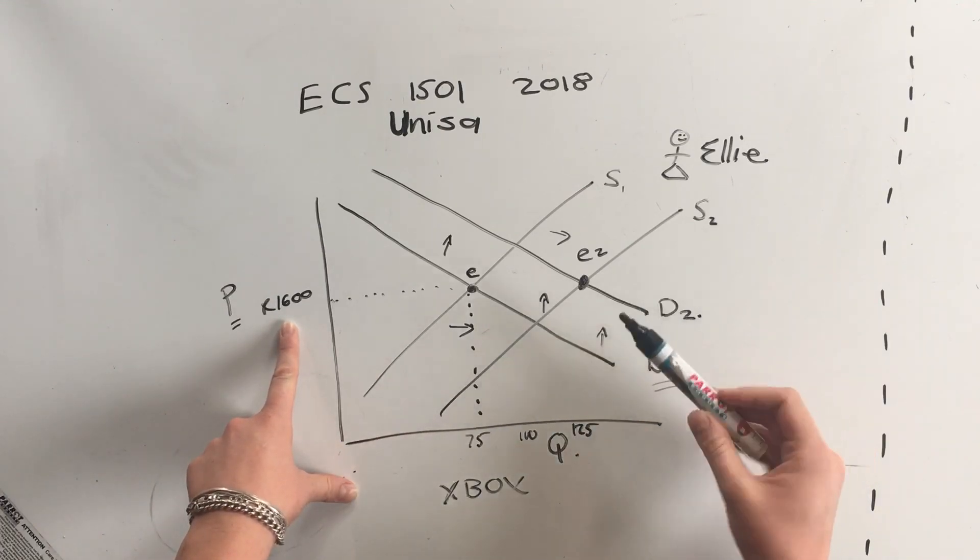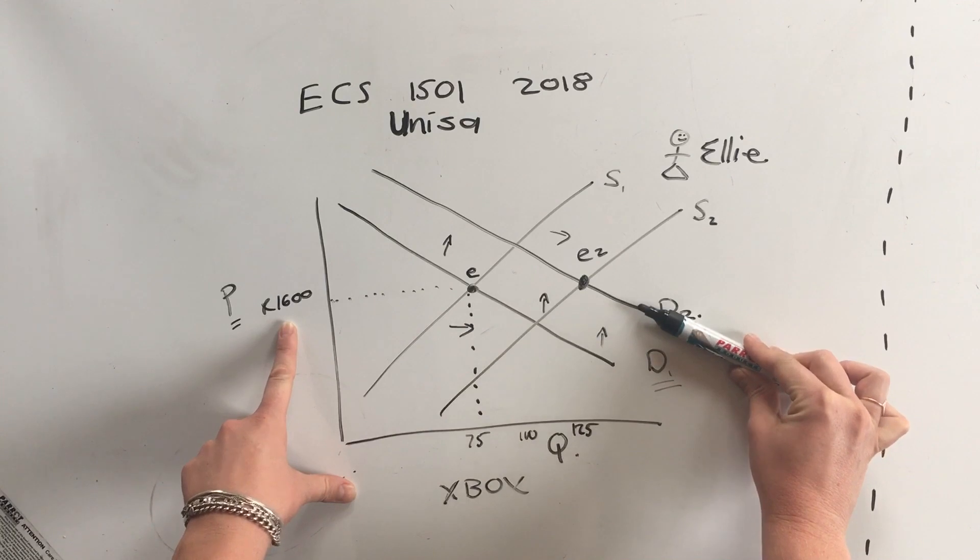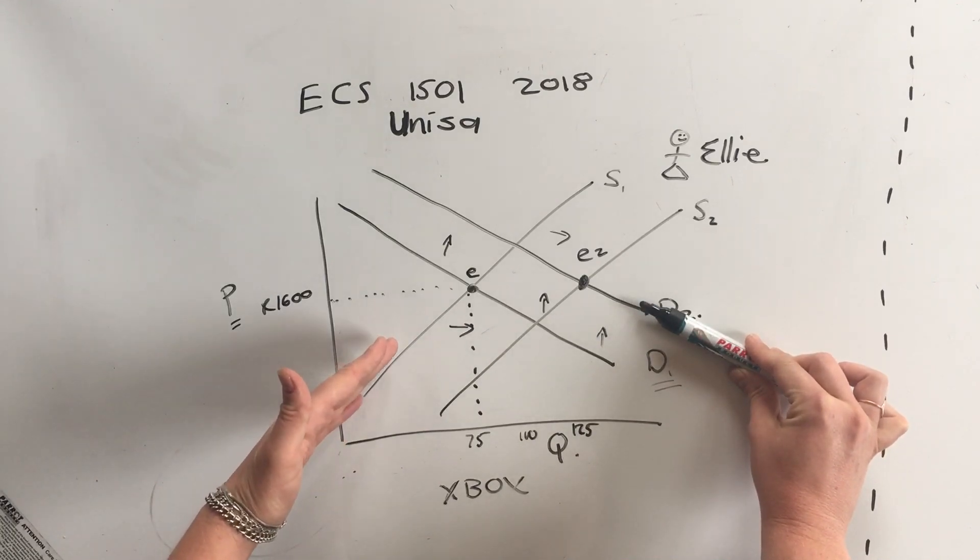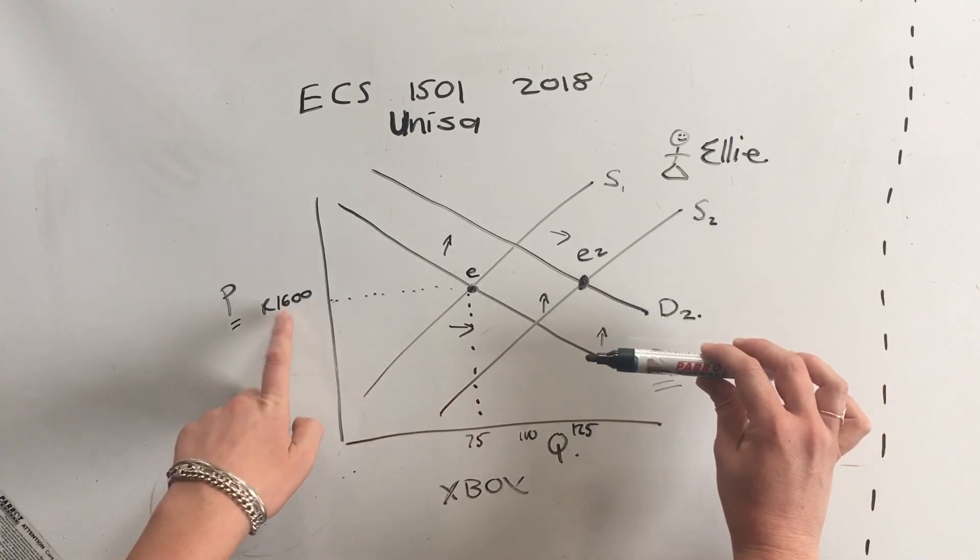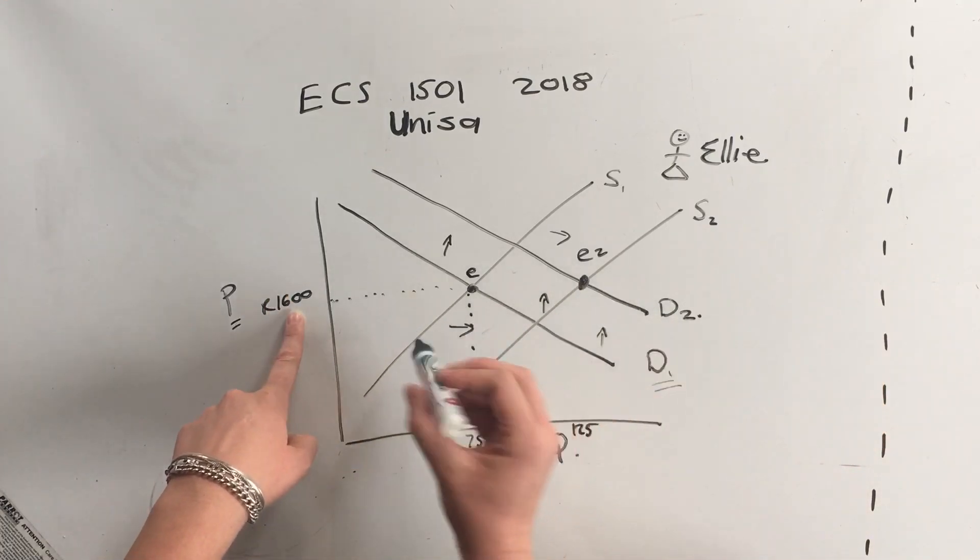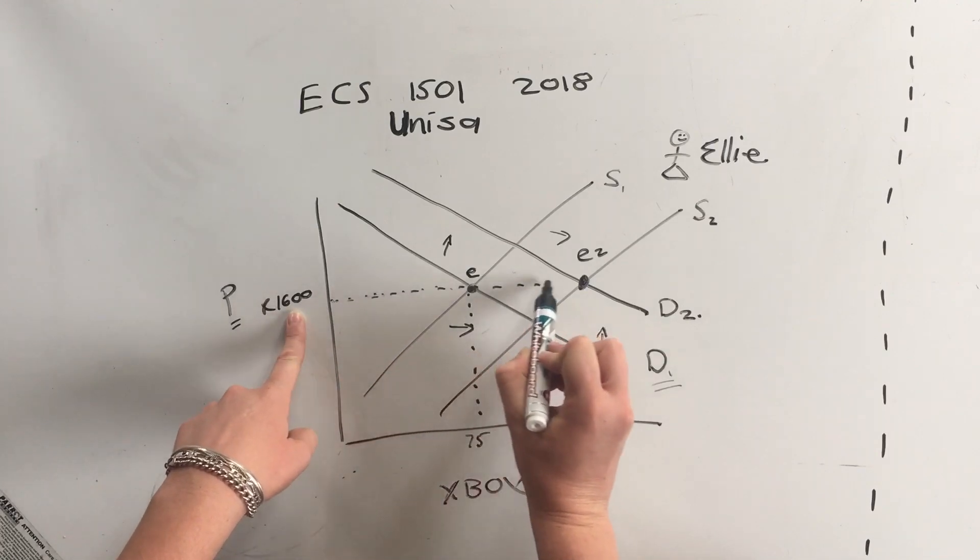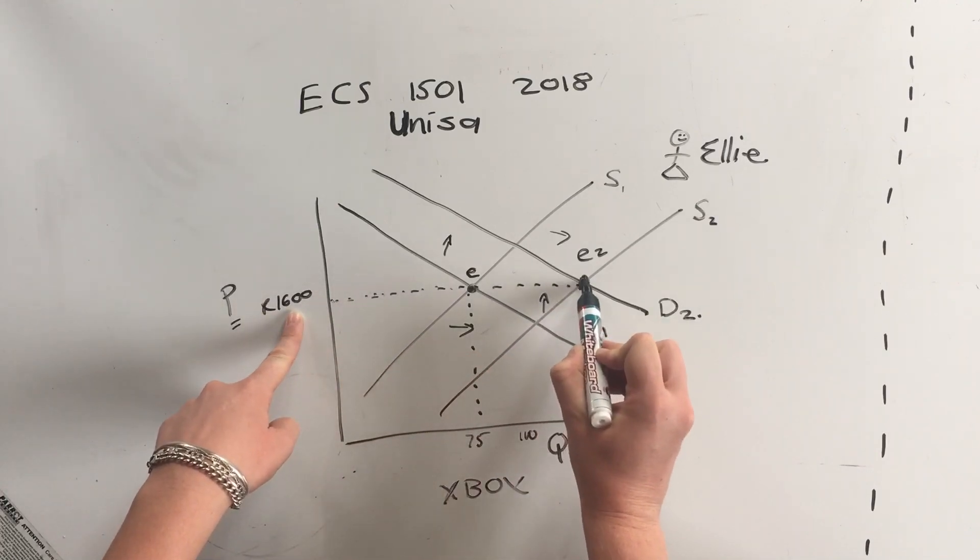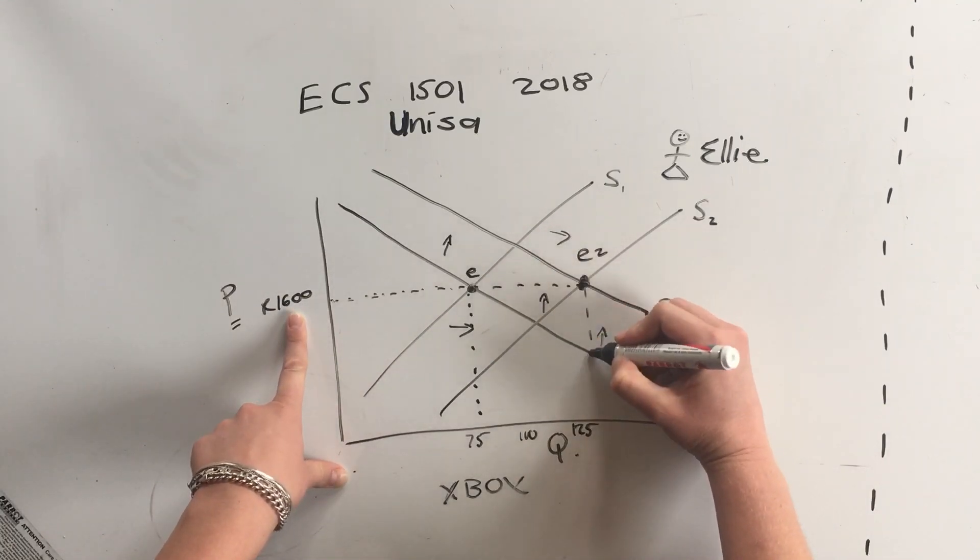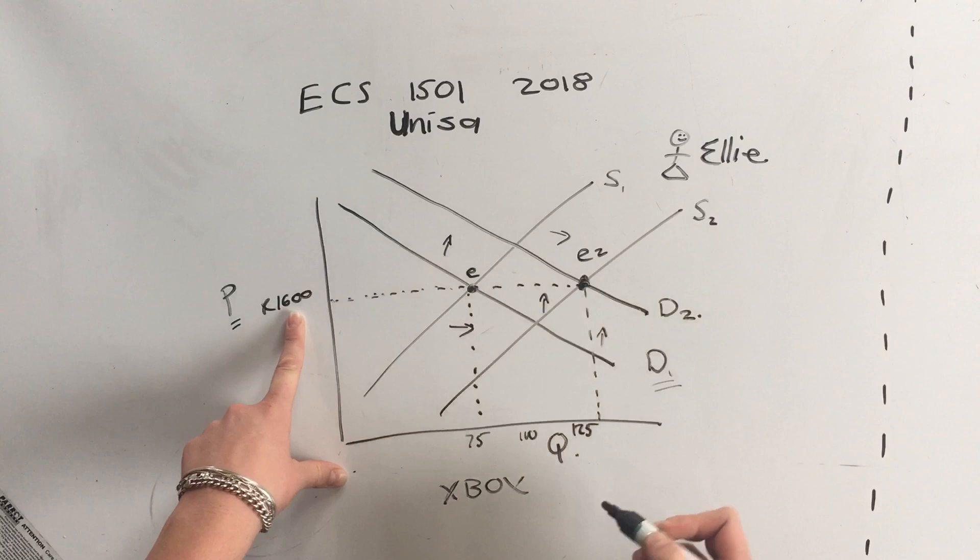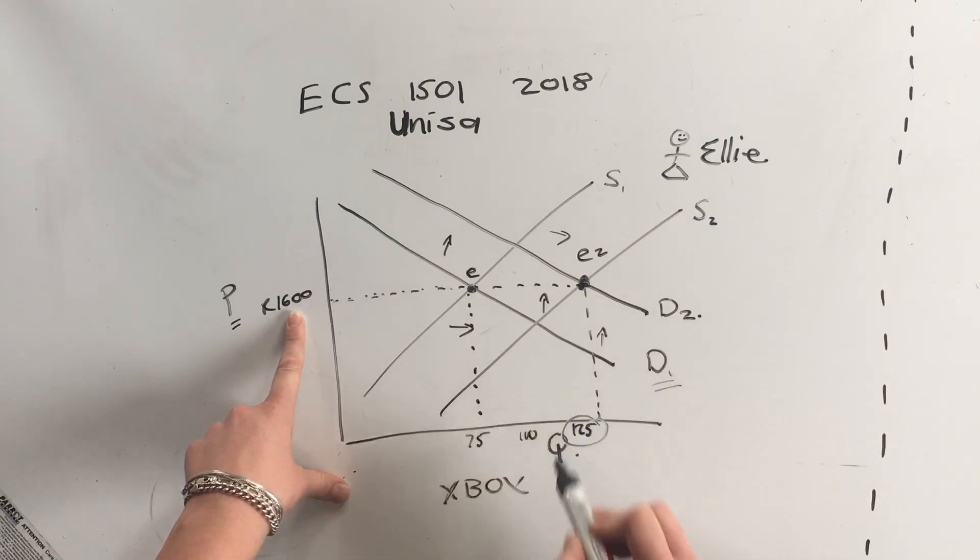So what this means is because there are more students on campus which increased overall demand and because of an exchange rate there are more second-hand Xboxes on the market, the supply increased. This means that at the same price our new equilibrium is over here, so a typical question will be what is the new quantity and the new quantity is 125.